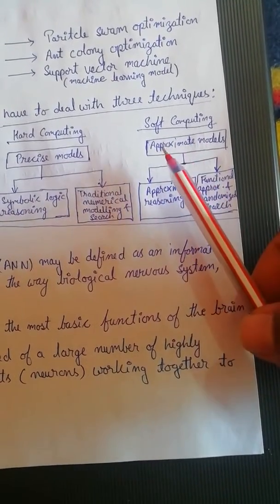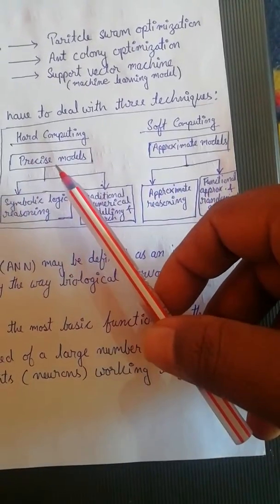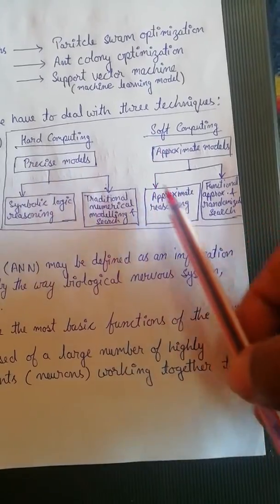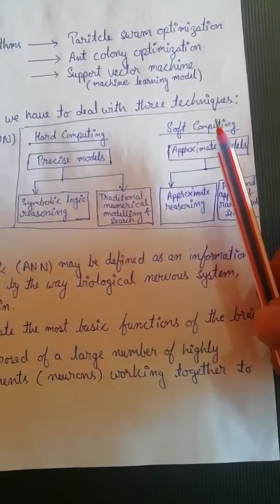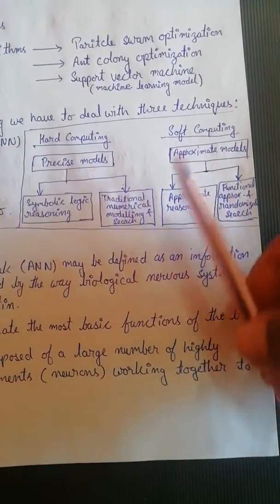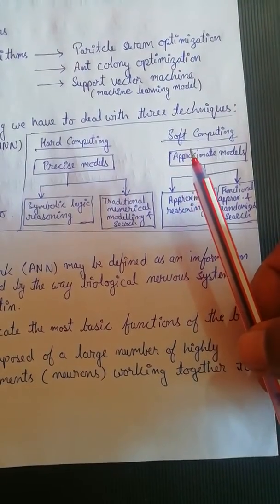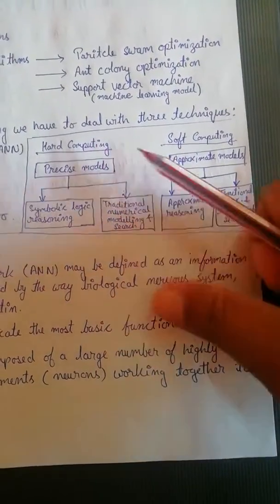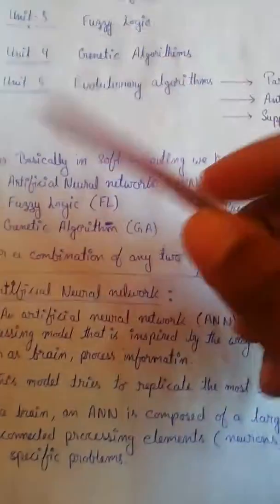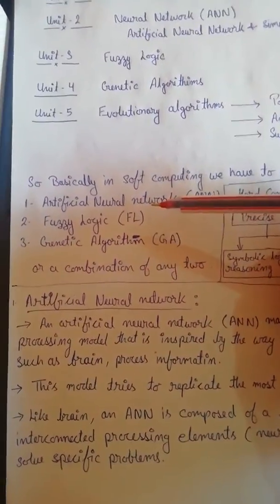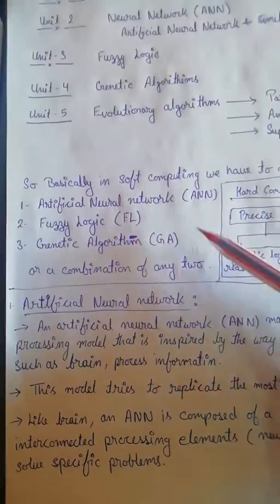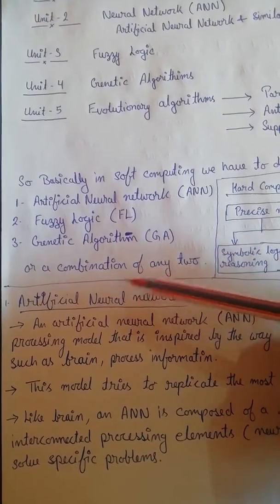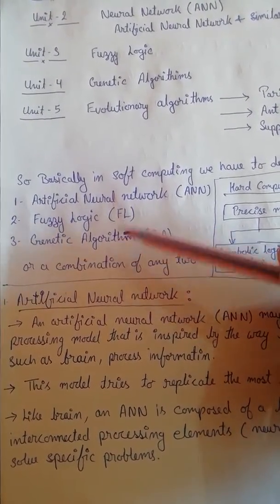Soft computing is basically when you approximate things, and when you have precise models you use hard computing. Soft computing came into the picture quite late — around the 1970s — and earlier we were using hard computing. In soft computing, these three methods are very important: artificial neural network, fuzzy logic, and genetic algorithms. You can also combine any two of these three computing methods.